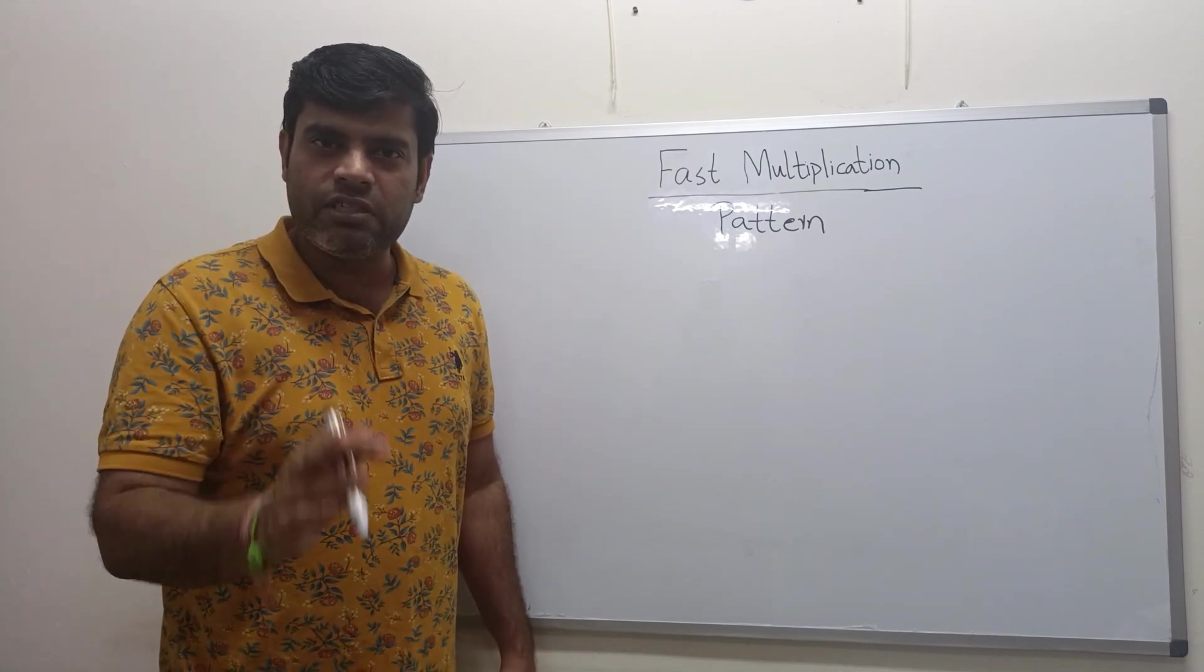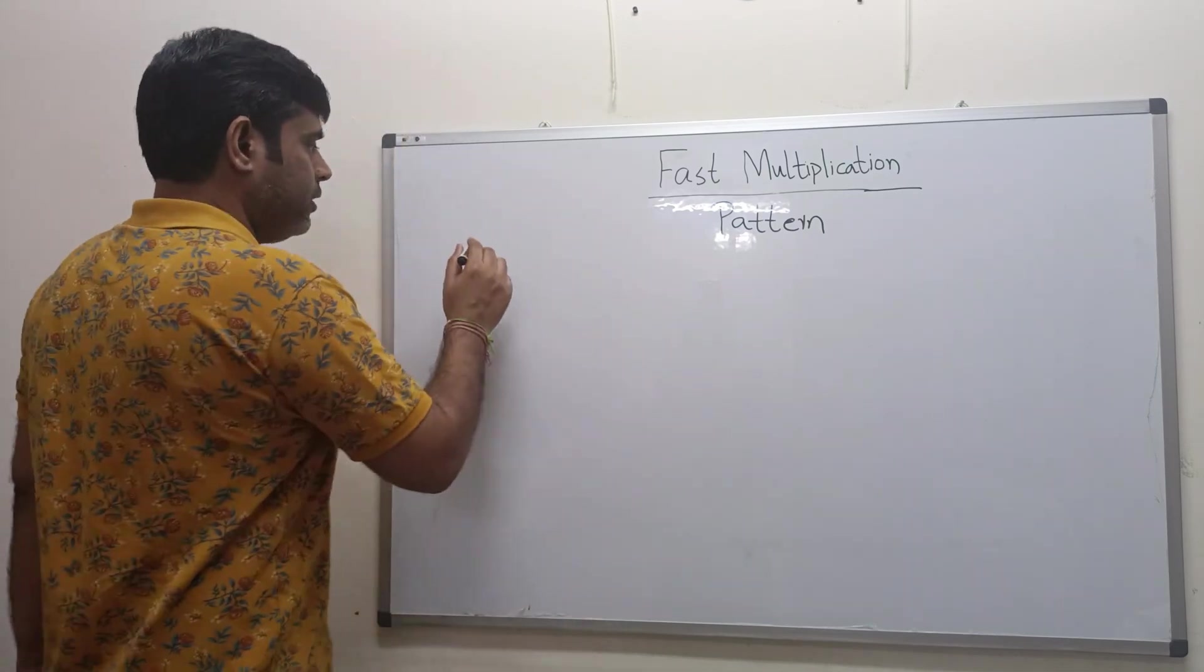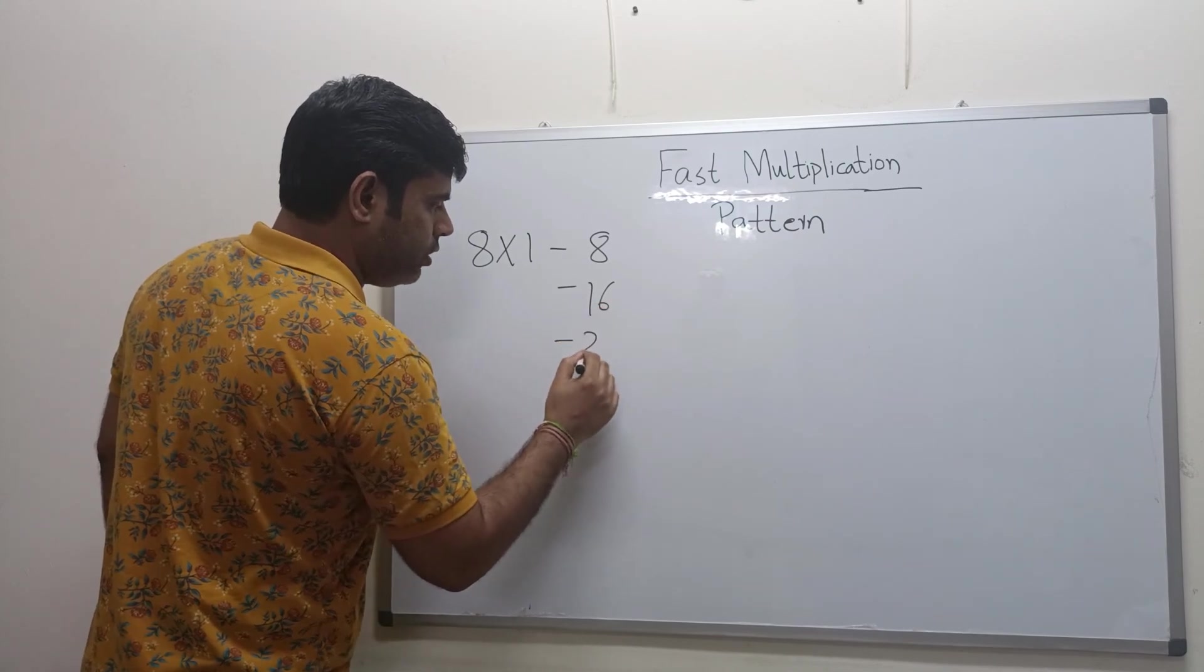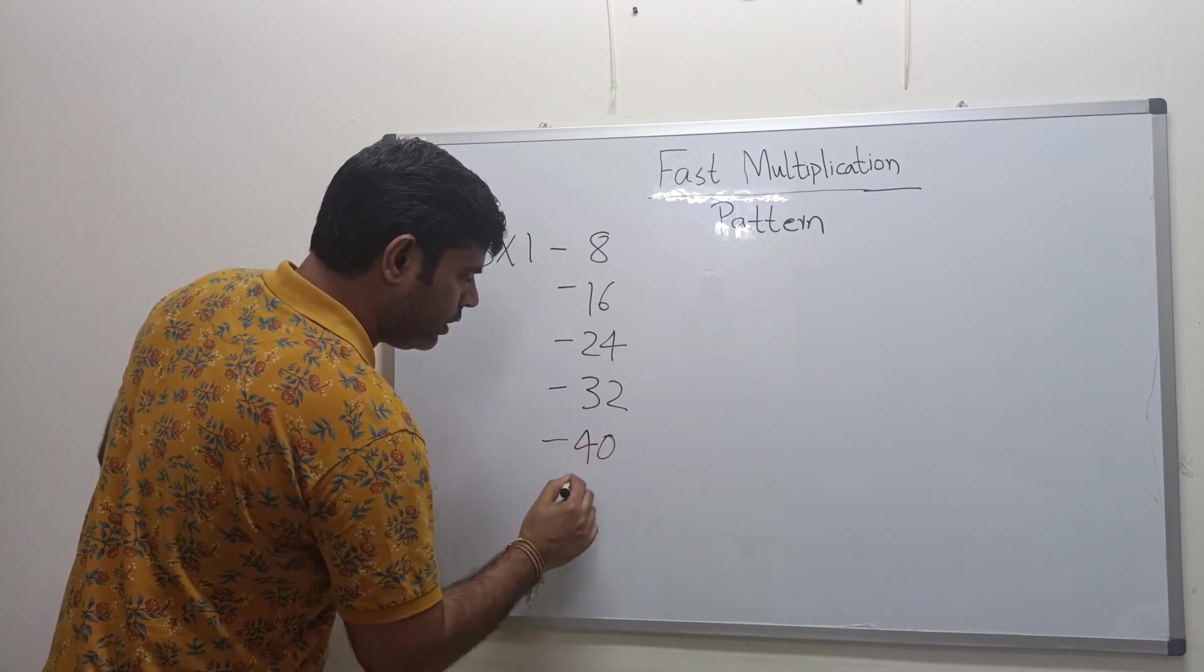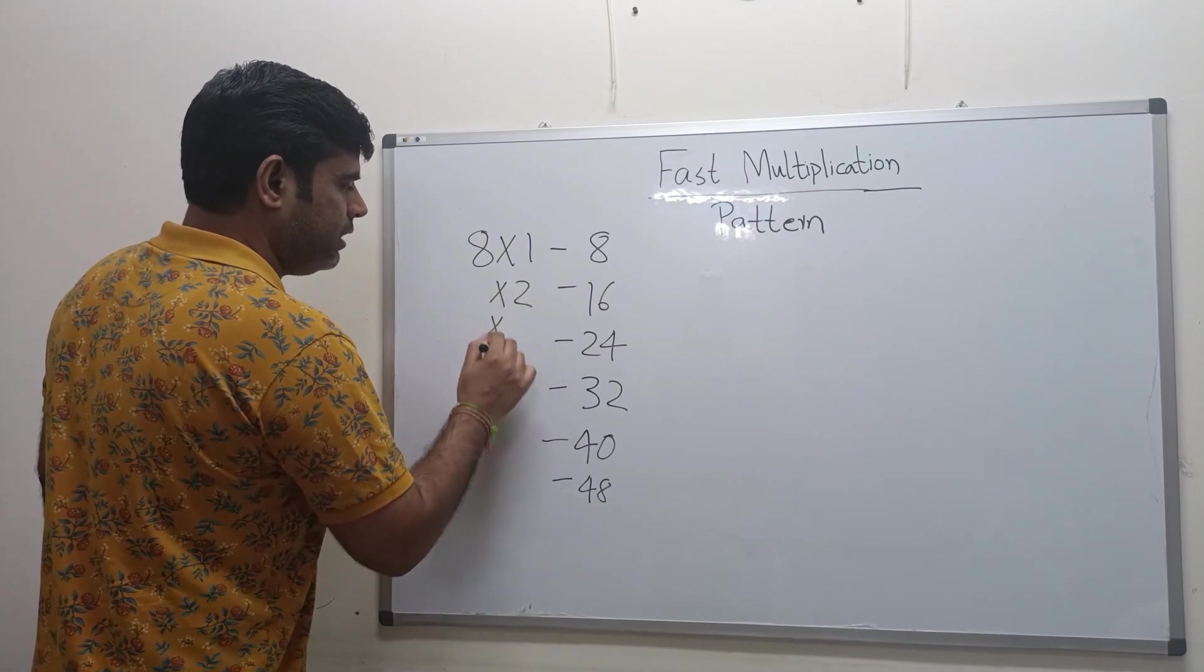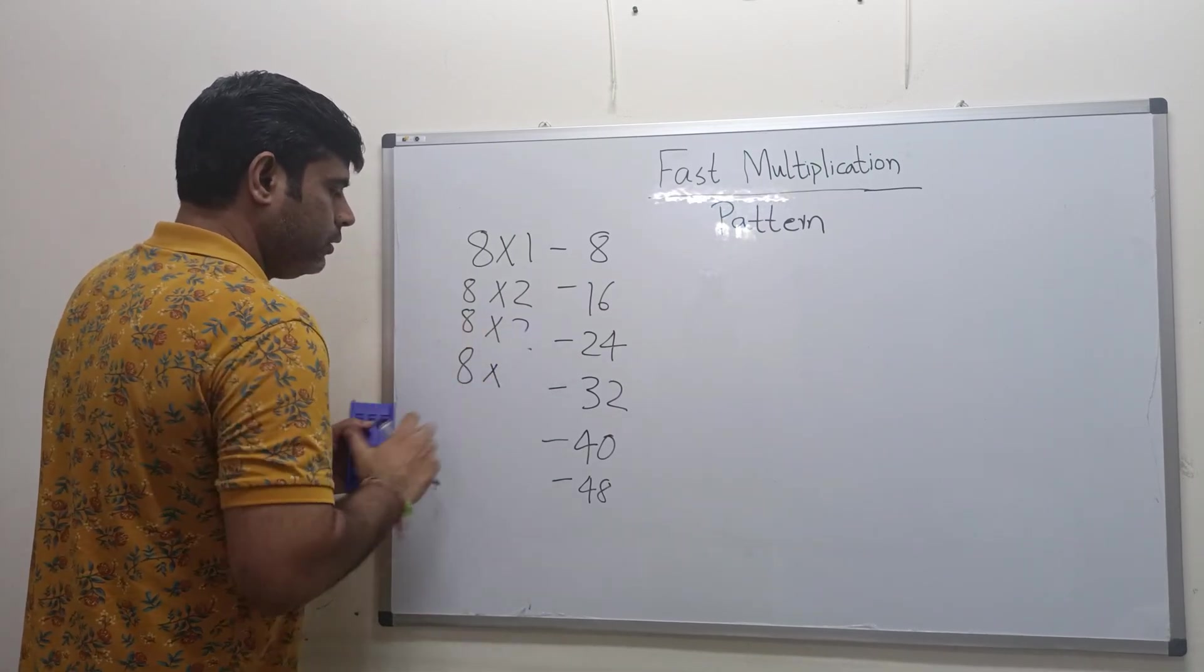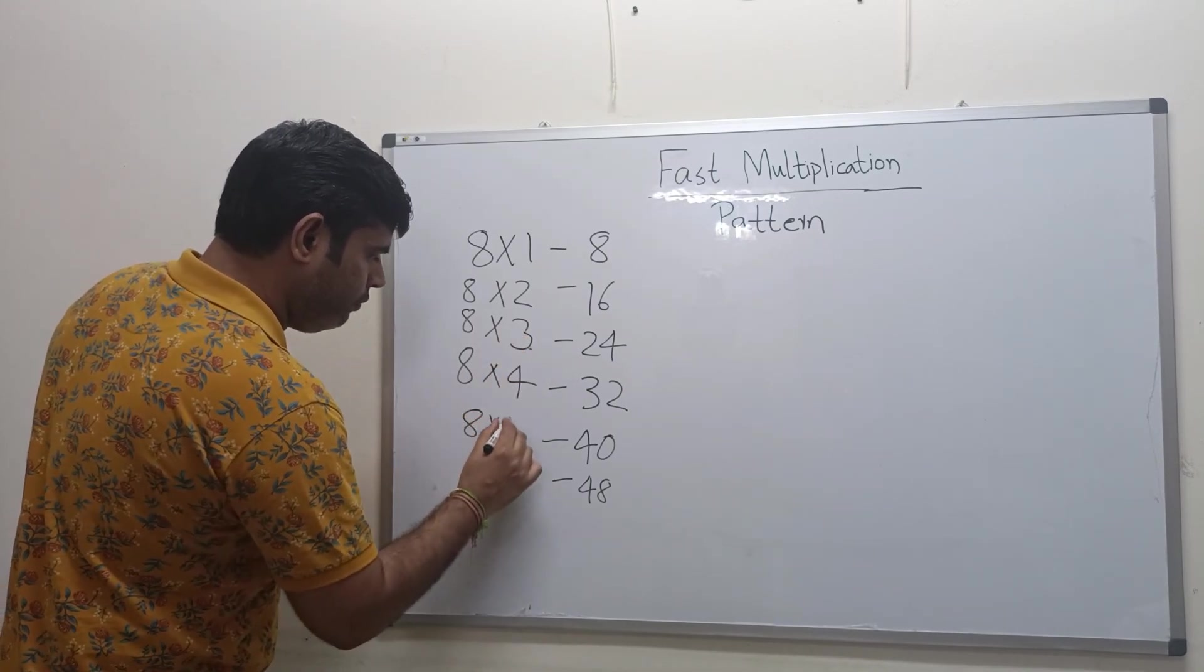In our Hindi version we have shown the table of 7, here we will use the table of 8. So you can see 8 multiplied by 1 is 8. I'm just writing the answers here to save your time. We will just go till 6 as we just want to understand the pattern.